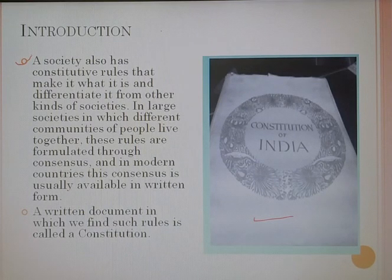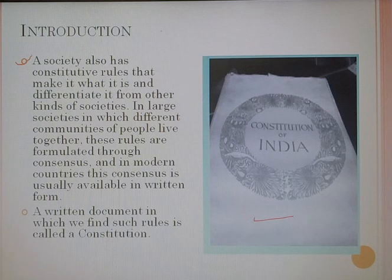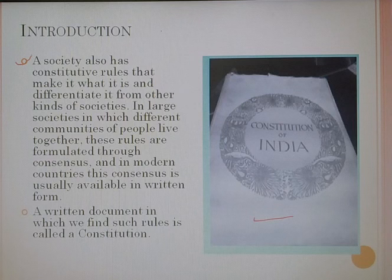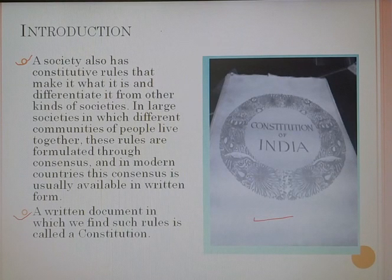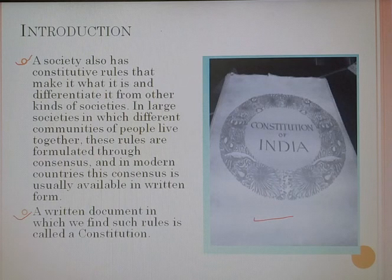A society also has constituted rules that make it what it is and differentiate it from other kinds of societies. In large societies where different communities of people live together, these rules are formulated through consensus, and in modern countries, this consensus is usually available in written form. So that written document of rules we are going to call the Constitution — a written document where the set of rules agreed upon by everyone living in that society or country.